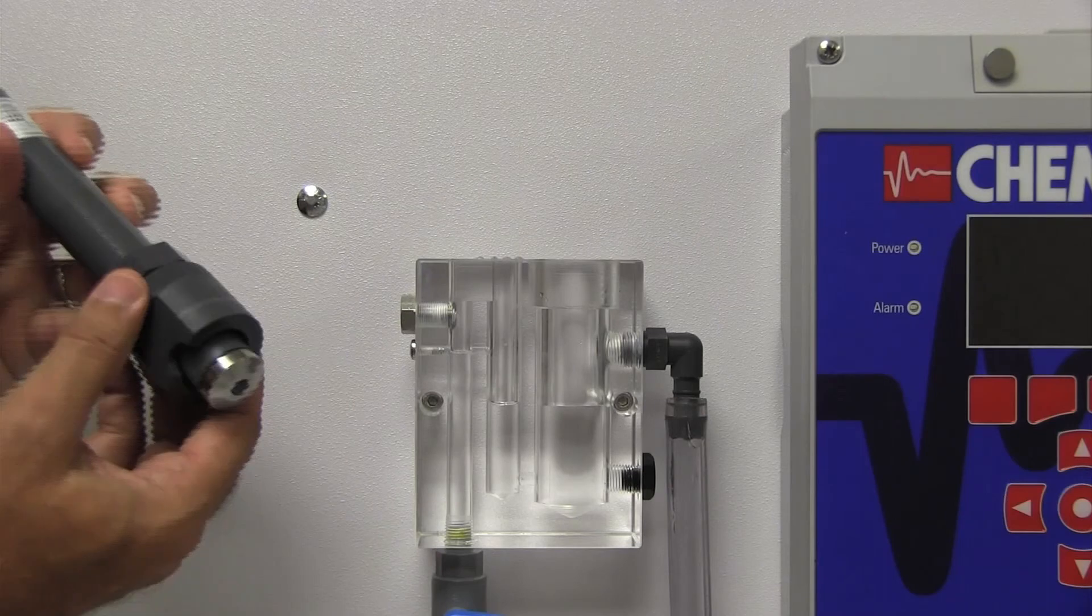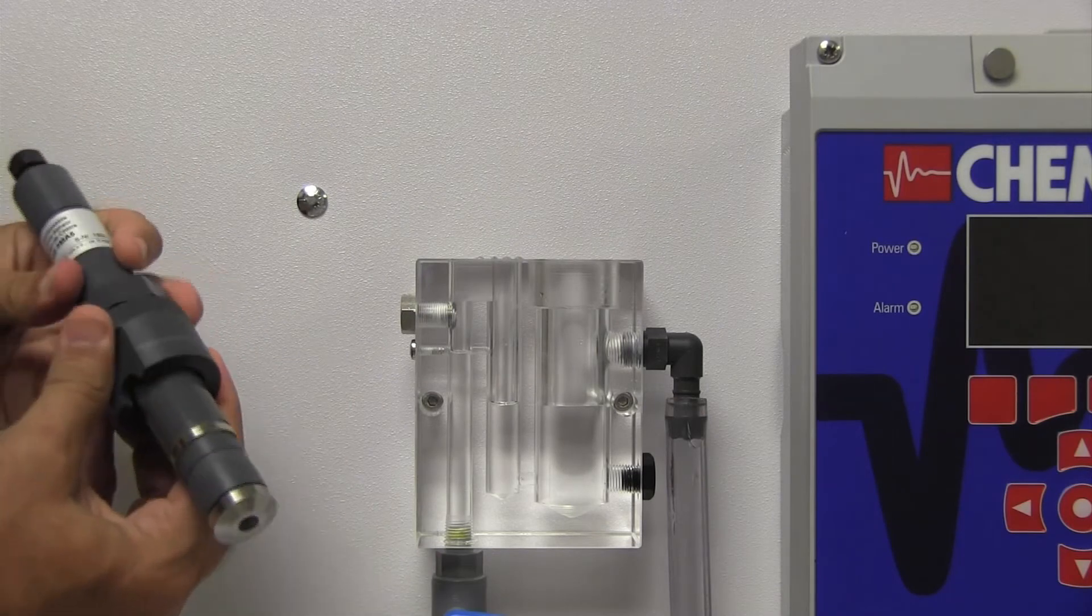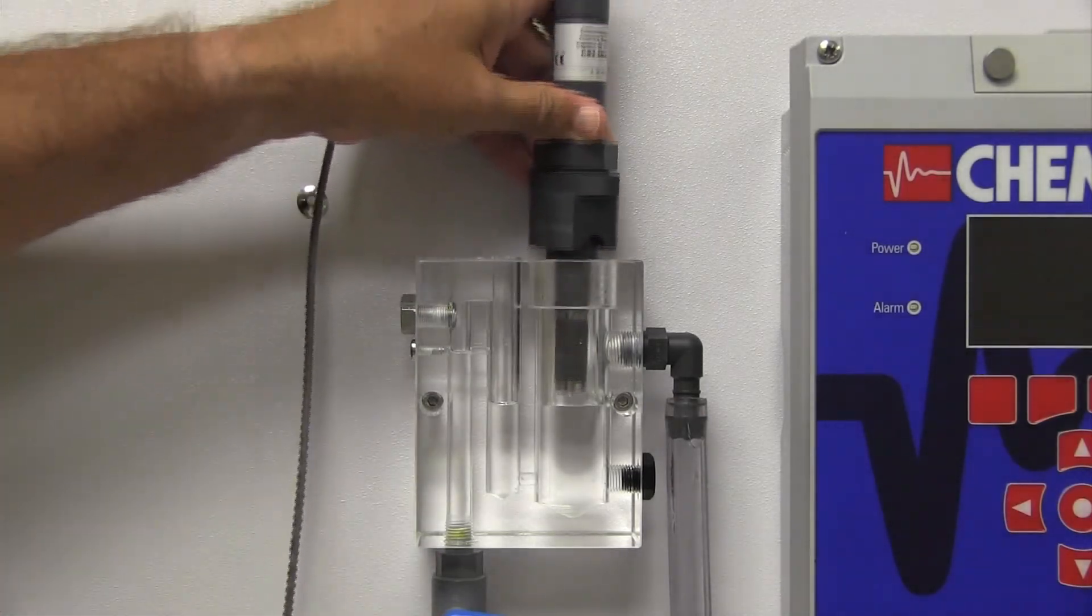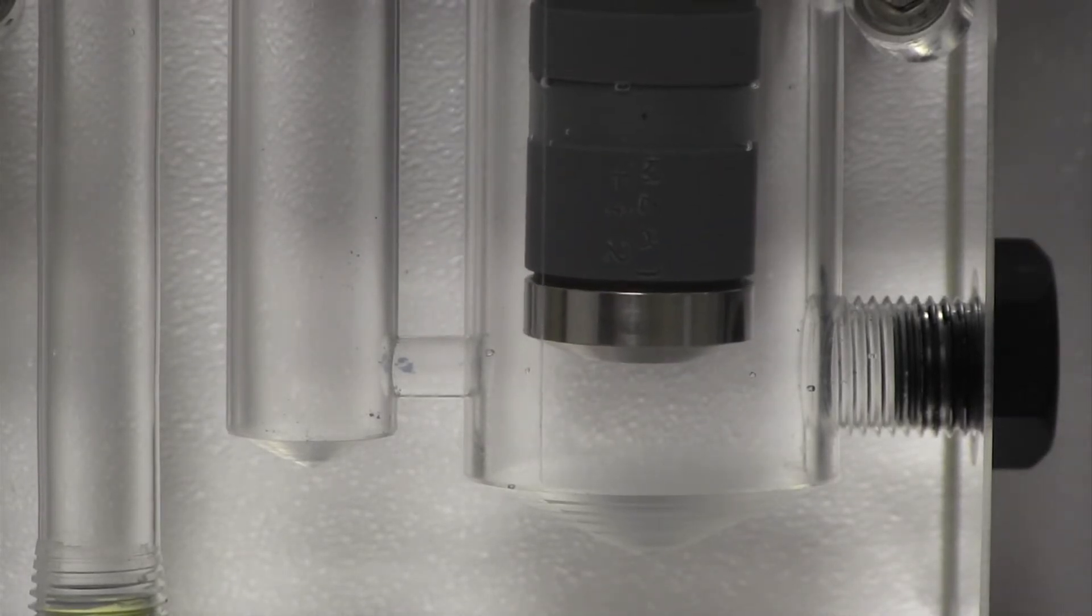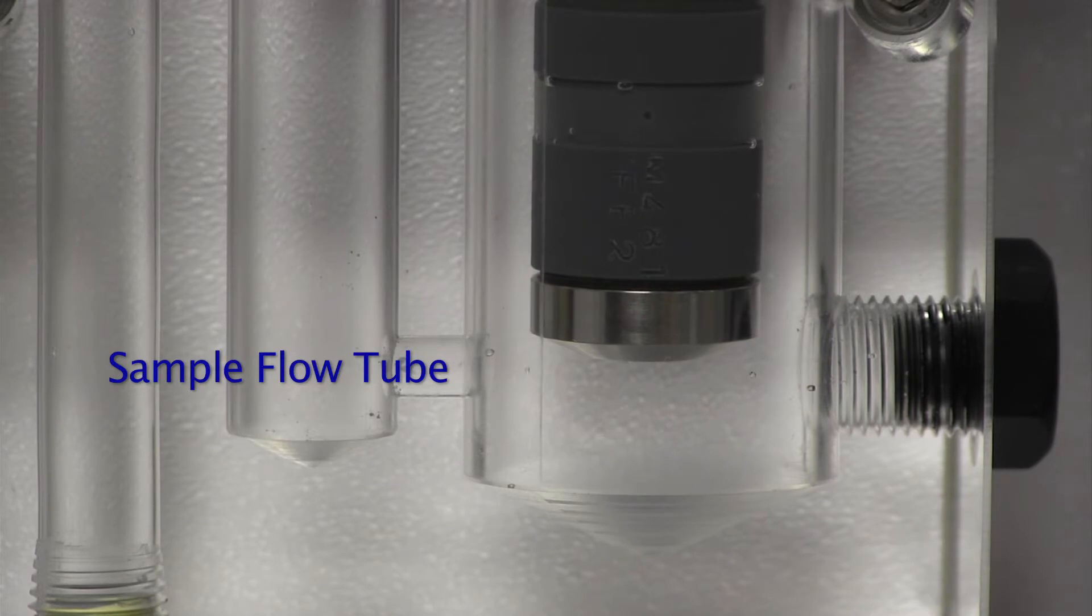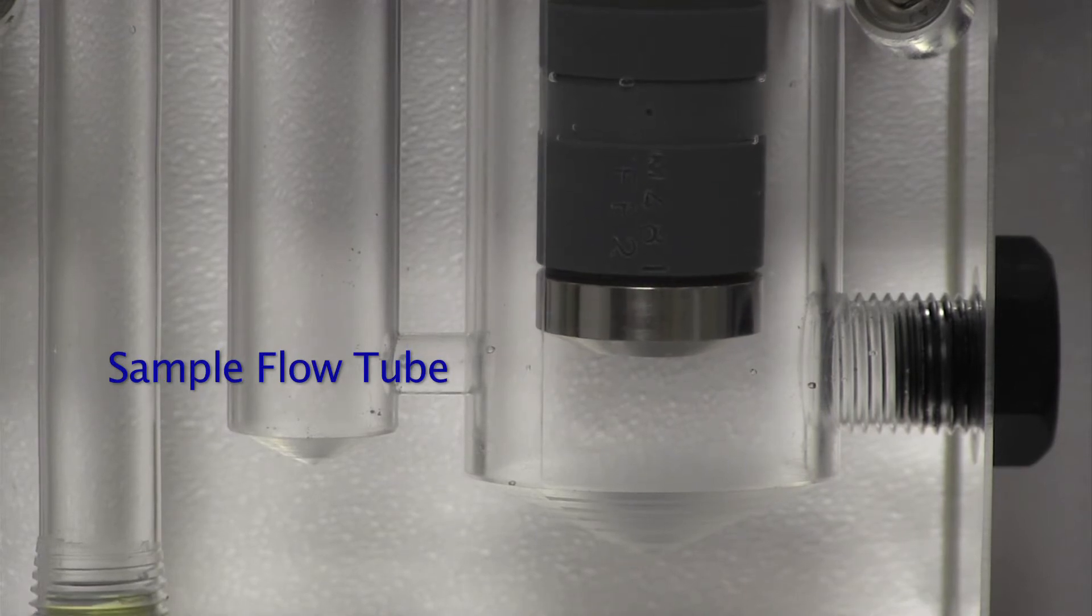When installing, slide the PVC fitting over the probe and then insert the probe into the flow cell. Adjust the PVC fitting so that the probe tip is positioned just above the horizontal sample flow tube near the bottom of the chamber.